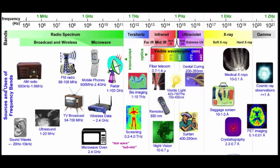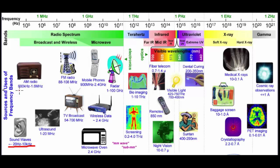Frequency is the number of times something varies per second. This graph plots frequency in hertz — times per second — all the way from basically zero up to 10 to the 21st power. The audio spectrum is way down at the very bottom: roughly 20 times per second up to about 10,000 to 20,000 times per second for people with very good hearing. Moving up the spectrum, from 600,000 to 1.6 million times per second is the AM radio spectrum.